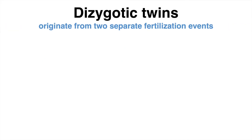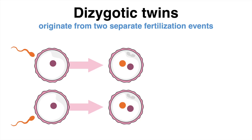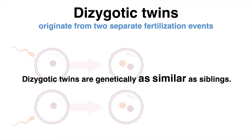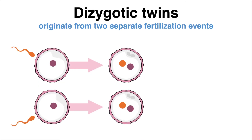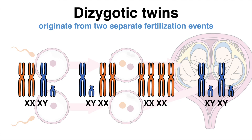Dizygotic twins, in contrast, result from the fertilization of two separate eggs with two different sperm cells during the same pregnancy. Therefore, they share half of their genomes, just like any other pair of siblings does. And as dizygotic twins result from two separate fertilization events, they do not necessarily have to be of the same sex — both is possible.